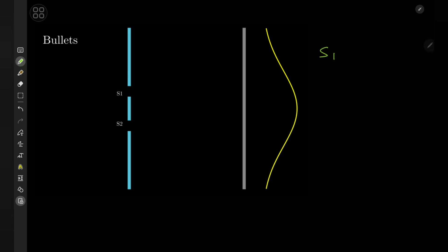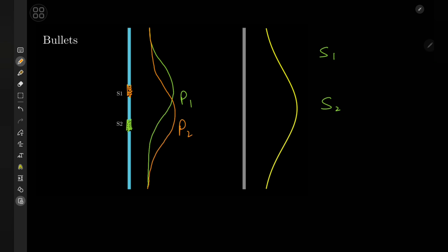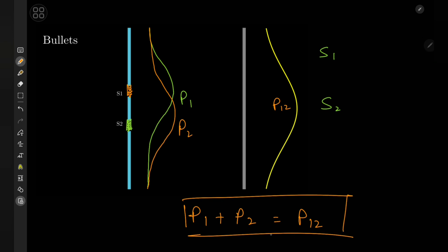Now to the blackboard for some mathematical analysis. Each bullet that hit the screen may have taken a path through S1 or through S2. If we block off S2 and let bullets only pass through S1, we get probability curve P1. The corresponding experiment blocking S1 gives curve P2. The sum of the two probability curves P1 and P2 does give us the combined probability curve P12 — the case when both slits were open. So for bullets: they arrive in lumps and their probabilities add up for different routes to the outcome.